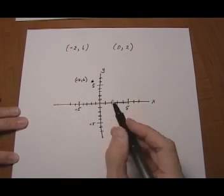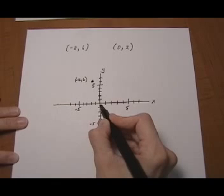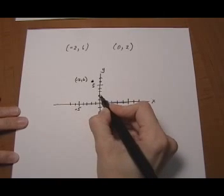And then we go 0, 2. Start at the origin. Move 0 sideways for x. Up 2. Right there.